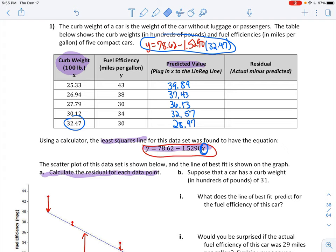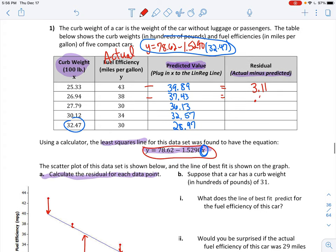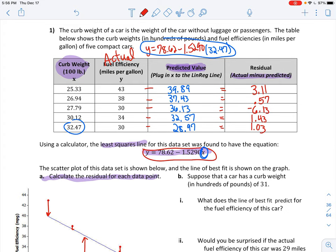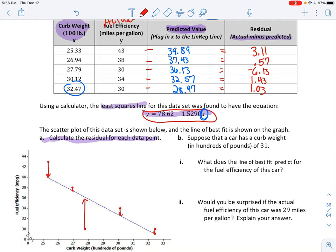Okay, so now to do your residual. It says take your actual minus your predicted. Here's your predicted. Here is your actual. So I'm just going to subtract. 43 minus 39.89 gives me 3.11. 38 minus 37.43 gives me 0.57. 30 minus 36.13 gives me negative 6.13. 34 minus 32.57 gives me 1.43. And 30 minus 28.97 gives me 1.03. So now I have all my residuals, and exactly what I said should happen happened. I have 1, 2, 3, 4 positive ones, and 1 negative one, because there was only one of those that were below that line of best fit.